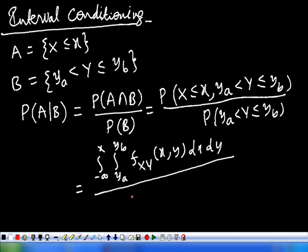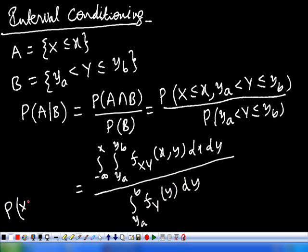And the denominator is the integral from yi to y_b of f_Y(y). So what we have is the probability of x less than or equal to x, given y lying in between yi and y. This is called the interval conditioning.